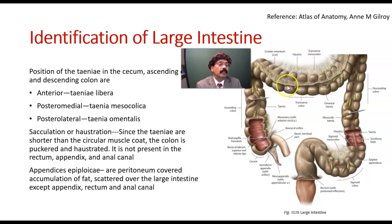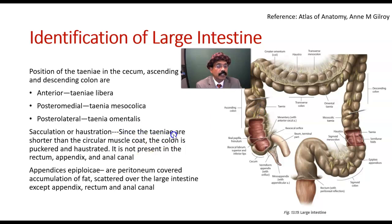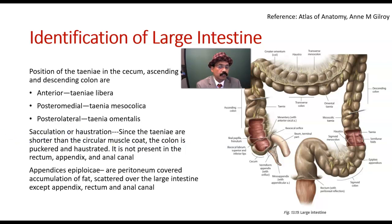This is the taenia coli here — haustration. These are the haustra. This is haustration and haustration occurs because the taenia are shorter than the circular muscle coat. We have two layers of muscle: the inner circular and the outer longitudinal muscle. The outer longitudinal muscles are shorter than the inner circular muscle in the wall of the large intestine. Therefore, we get haustration.